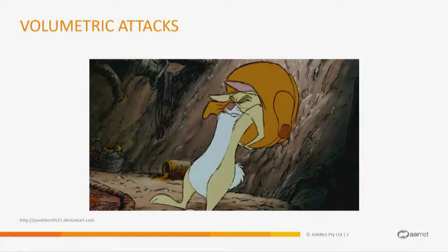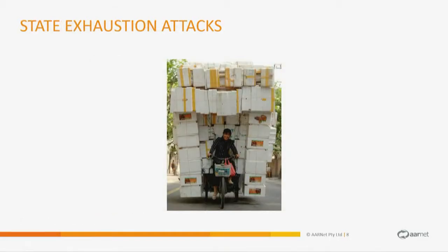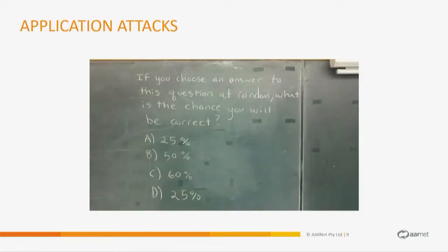We tend to categorise denial of service into three different categories. We've got volumetric attacks where you just shove as much traffic out of pipe as you can, hoping to shut it down. We've got state exhaustion attacks, which are targeted at stateful devices — something that allocates memory to keep track of TCP or UDP sessions — and if you shove enough sessions in, the network falls over. And then we've got application attacks, where you send traffic to an application that it can't really process and it falls over.